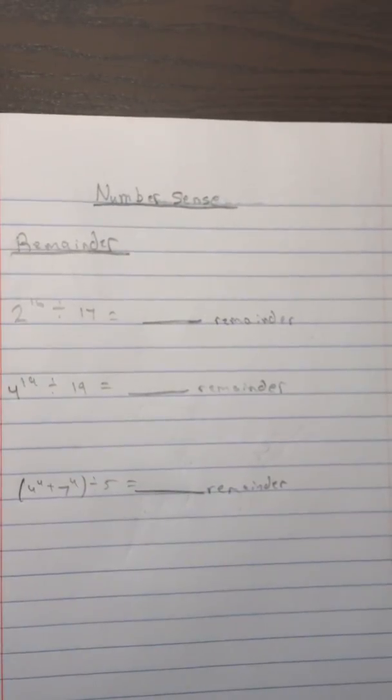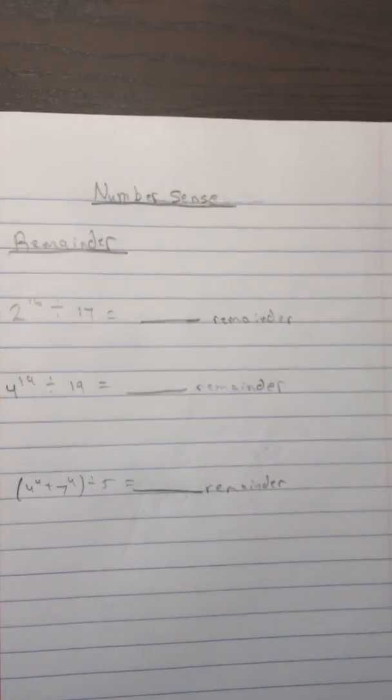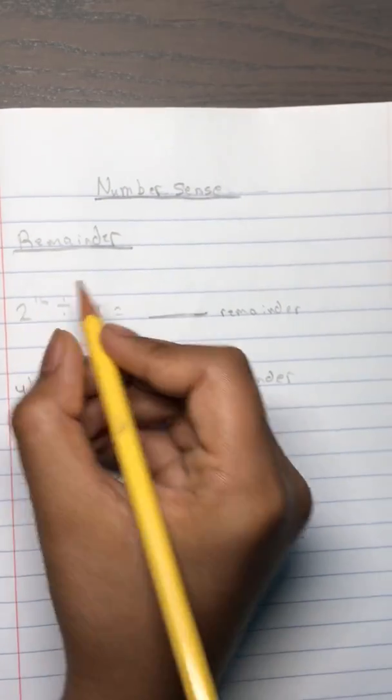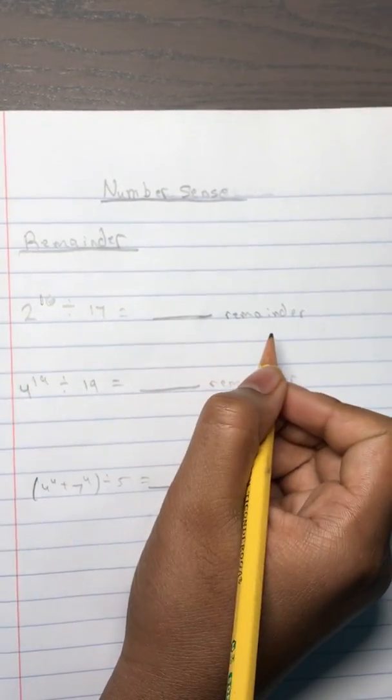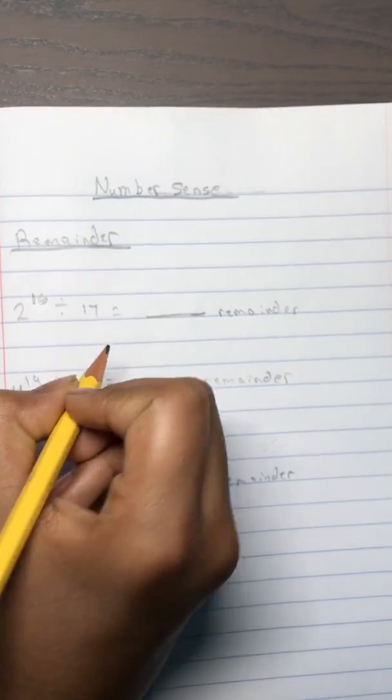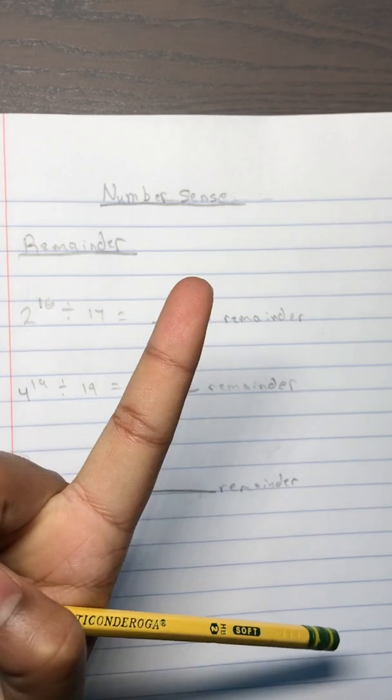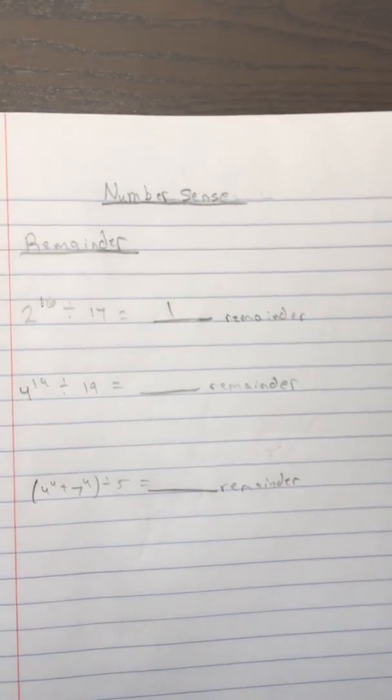Remainder problems come up very often in problems number 51 to 60, and they're extremely easy. It's just a bunch of three points for you to grab. Let's see. First type is when it says like 2 to the power of 16 divided by 17, and they ask you for the remainder. This trick only works when 17 minus 16 is 1. The answer is just simply 1, always and every single time that you try it.